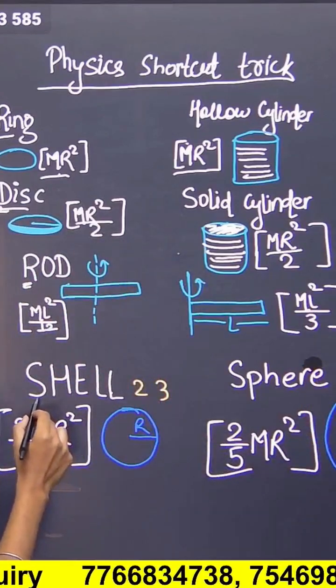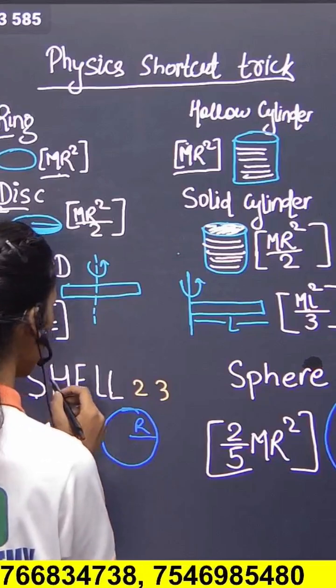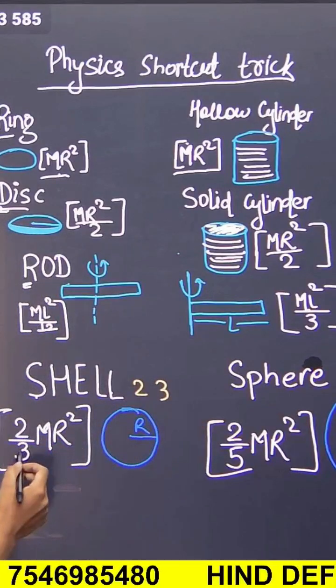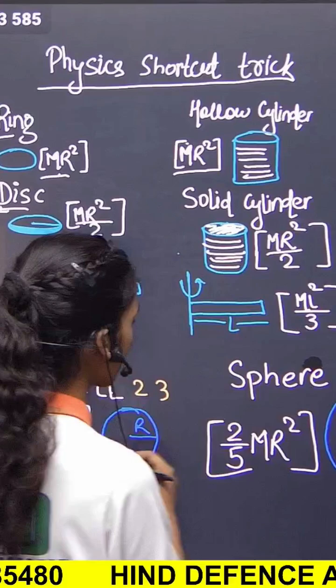And shell. Now we can change it. S as a 2 and E as a 3. So we can write 2 by 3 MR square. That is shell formula.